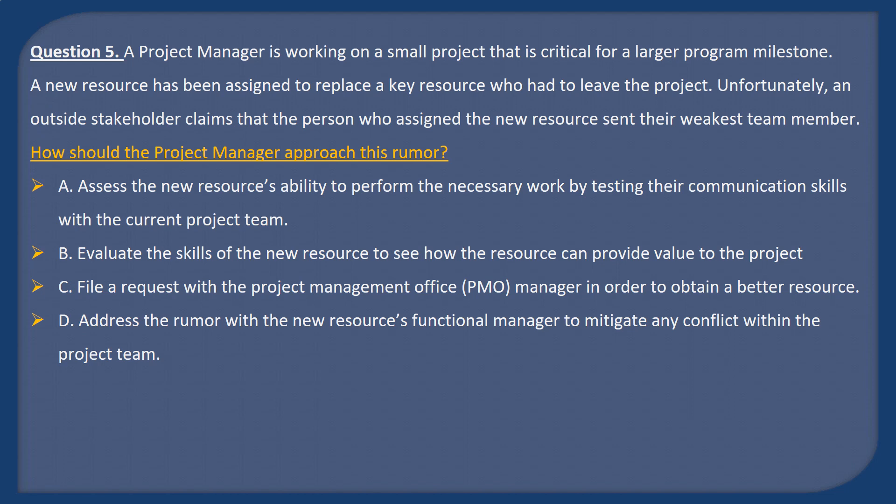A: Assess the new resource's ability to perform the necessary work by testing their communication skills with the current project team. B: Evaluate the skills of the new resource to see how the resource can provide value to the project. C: File a request with the PMO manager in order to obtain a better resource. D: Address the rumor with the new resource's functional manager to mitigate any conflict within the project team.